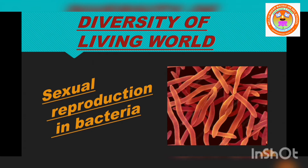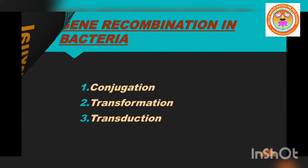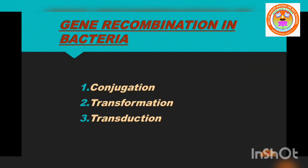Typical sexual reproduction involving the formation and fusion of gametes is absent in bacteria — there is no formation of gametes and no fusion of gametes. However, gene recombination can occur in bacteria by three different methods: conjugation, transformation, and transduction.